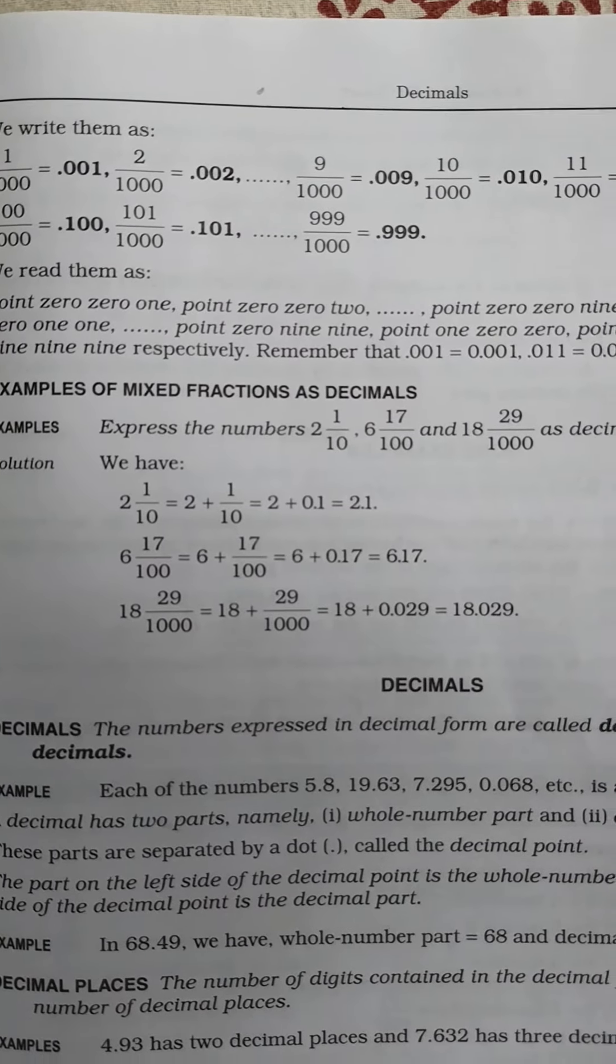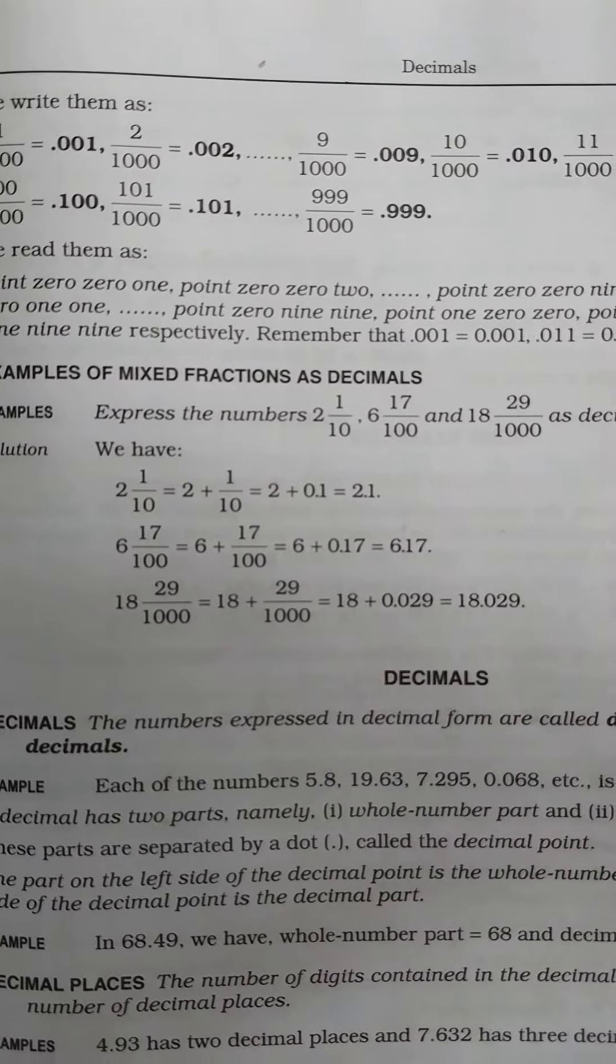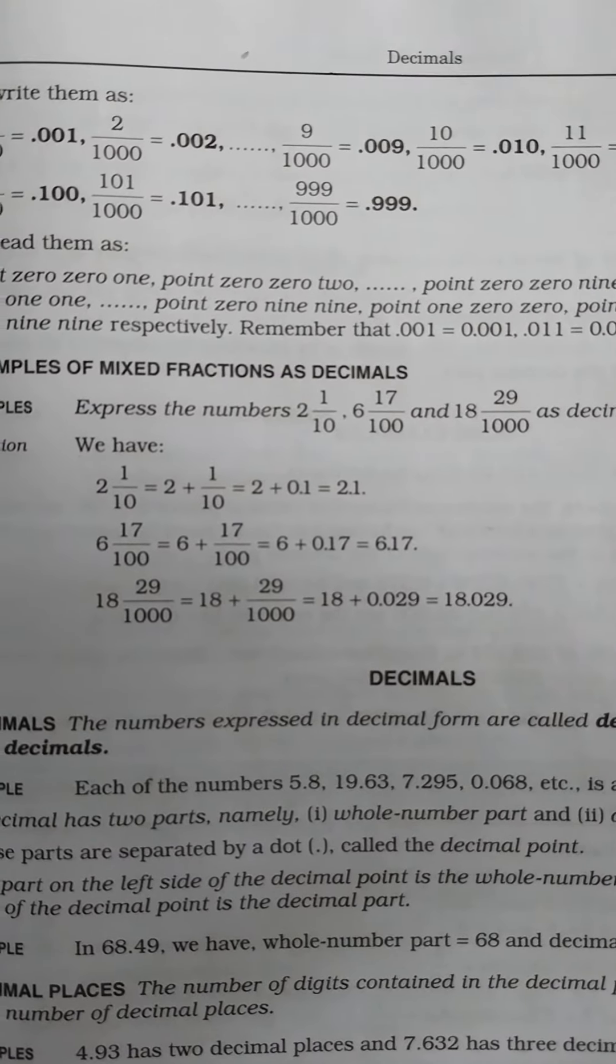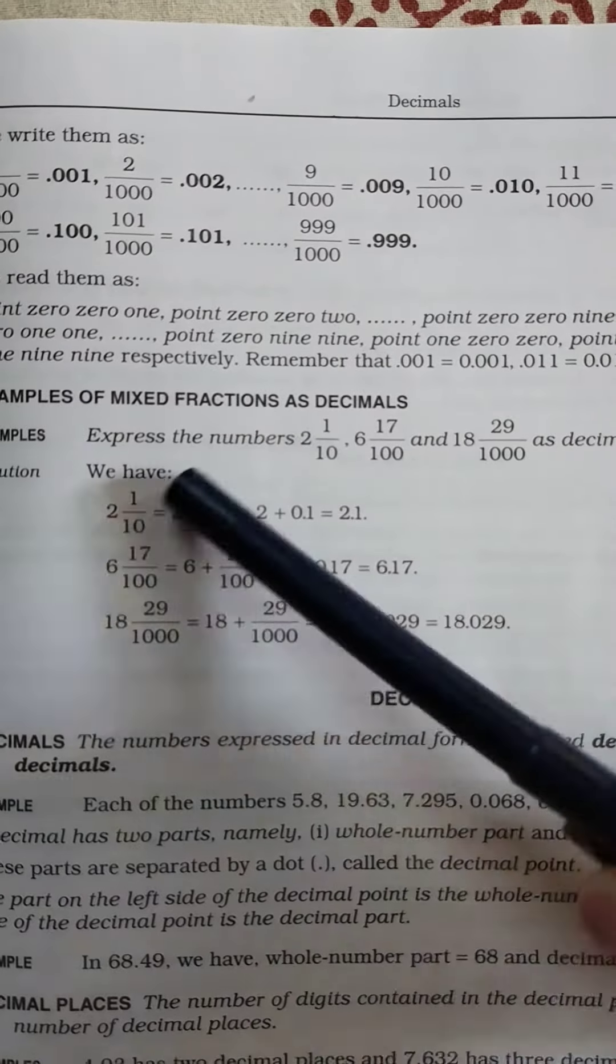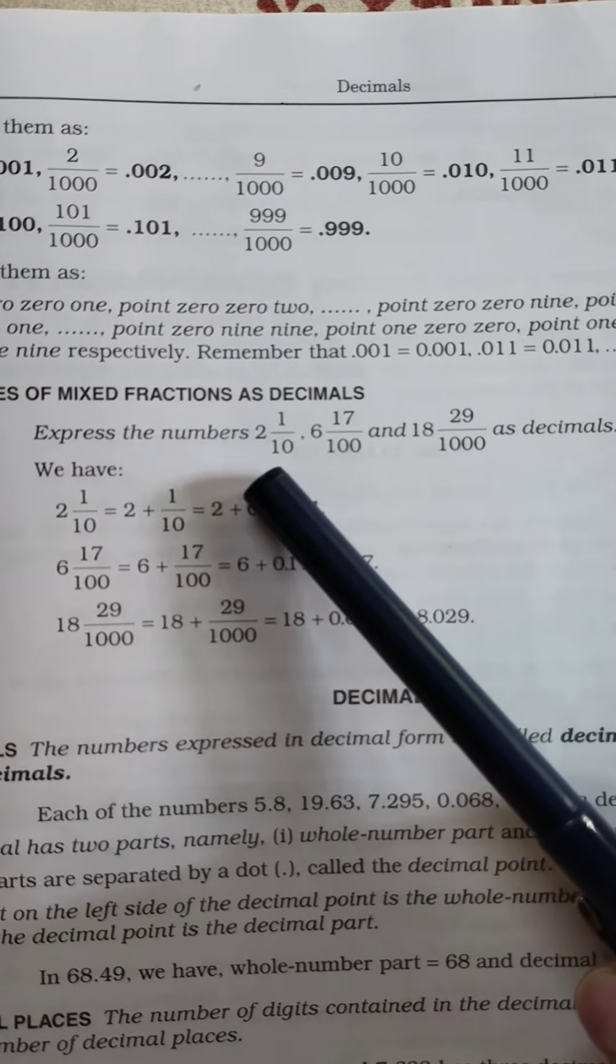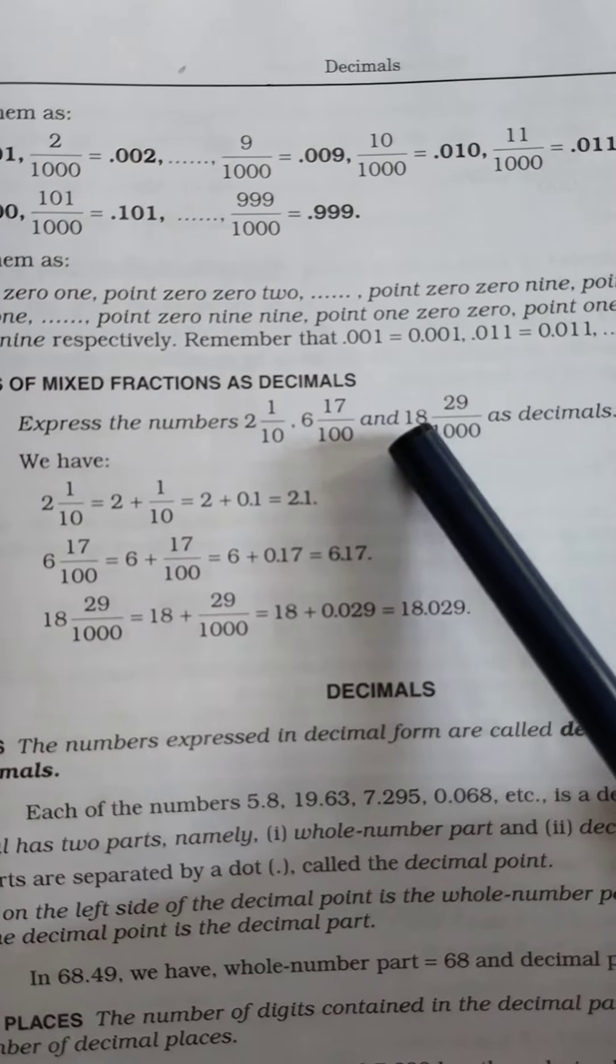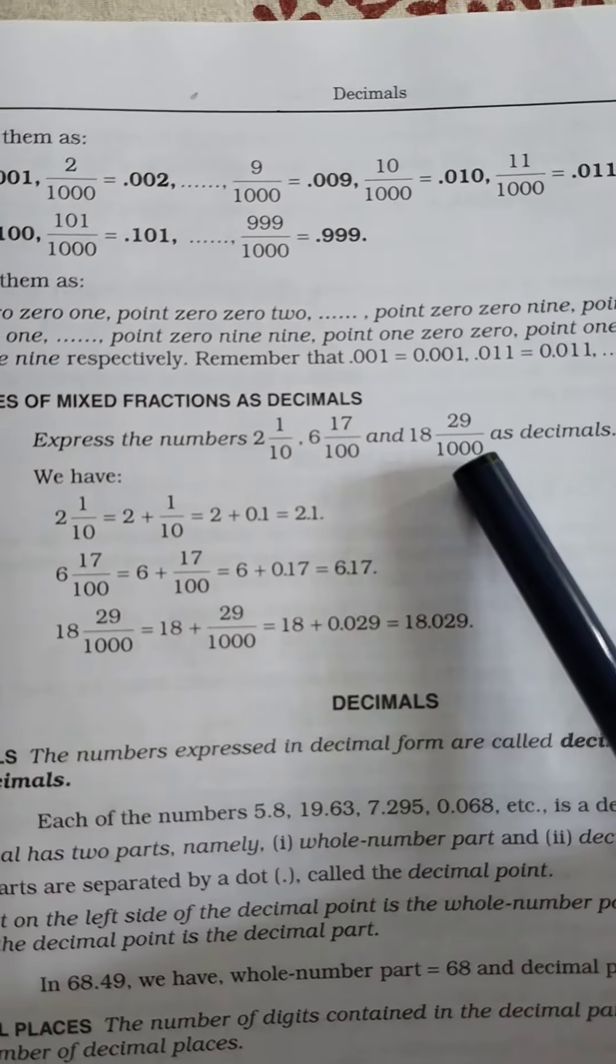Students, in this video we will learn how to convert mixed fractions as decimals. Here are the examples: 2 and 1/10, 6 and 17/100, and 18 and 29/1000.